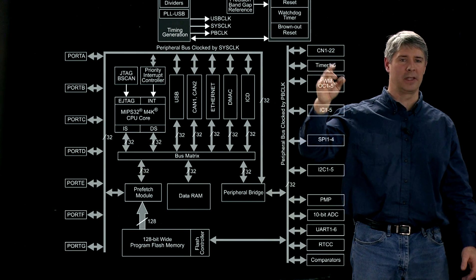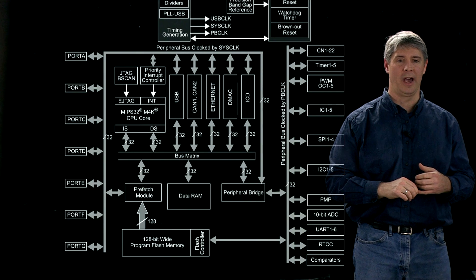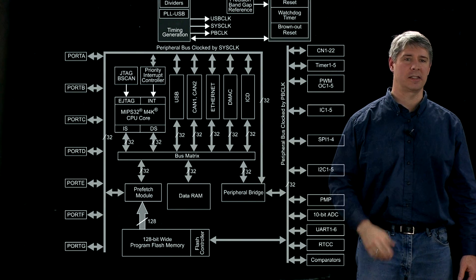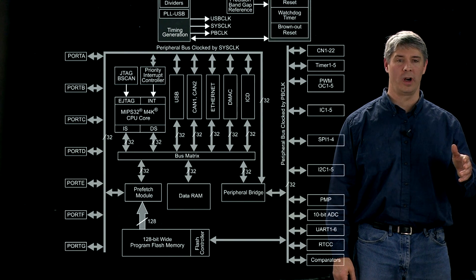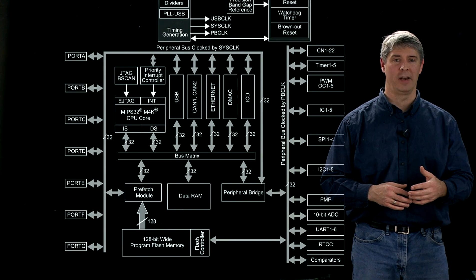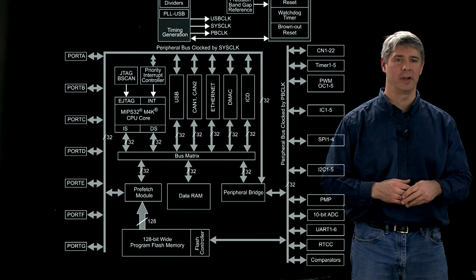So the change notification pins look for any change in the outside world, and then they generate an interrupt if one happens. We've got timer 1 to 5 here, and each of these can count up from 0 to 2 to the 16 minus 1. We can also take pairs of them and put them together and make a 32-bit timer out of them. So those can be used for counting or for timing operations.